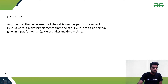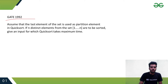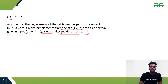This next question is GATE 1992 — a conceptual question for quicksort. Assume that the last element is used as the partition element (pivot). If n distinct elements from the set 1 to n are to be sorted, give an input for which quicksort takes maximum time. We have to tell which arrangement of elements like 1, 2, 3, 4, ... up to n will take the maximum time.